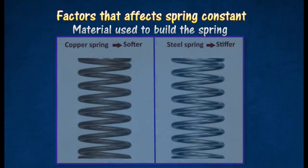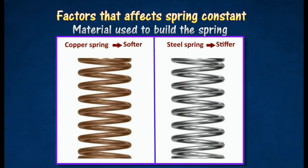Springs made from materials that are stiff and hard are naturally stiffer and harder. For example, steel springs are much harder than copper springs and thus have a larger spring constant.